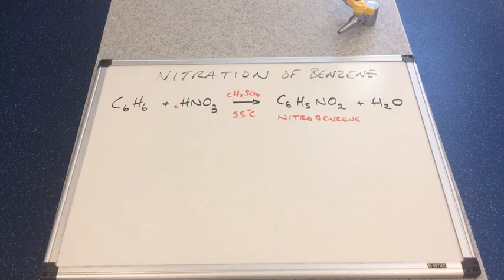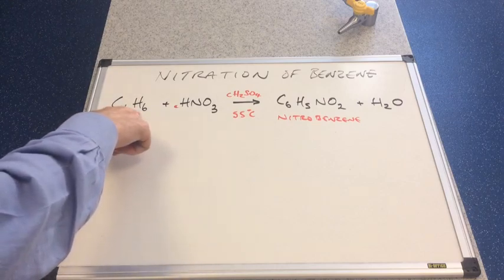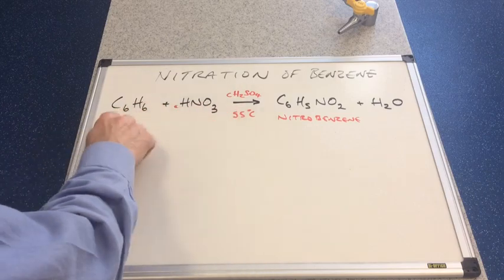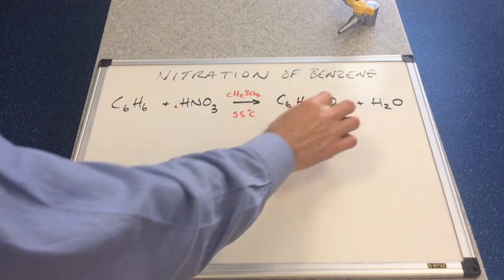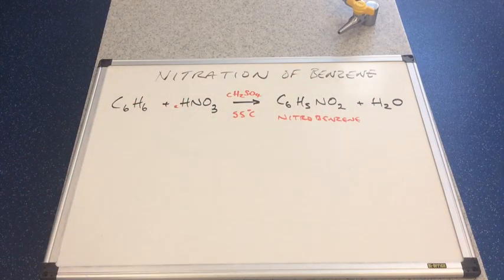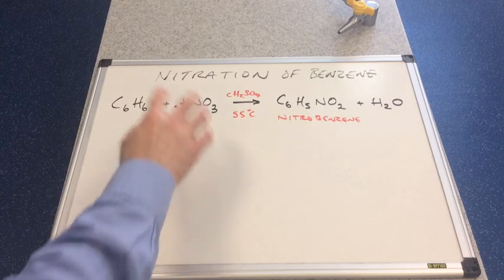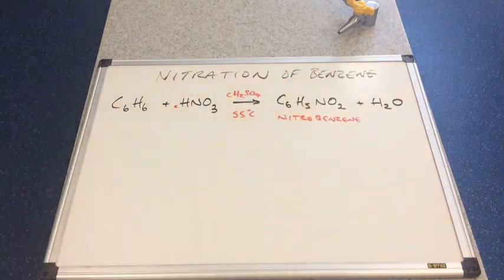You can see the substitution, we've lost a hydrogen from the benzene ring, so it's gone from C6H6 to C6H5 and the hydrogen has been replaced by the NO2 part from the nitric acid. You'll see when we look at the mechanism how the water is formed.